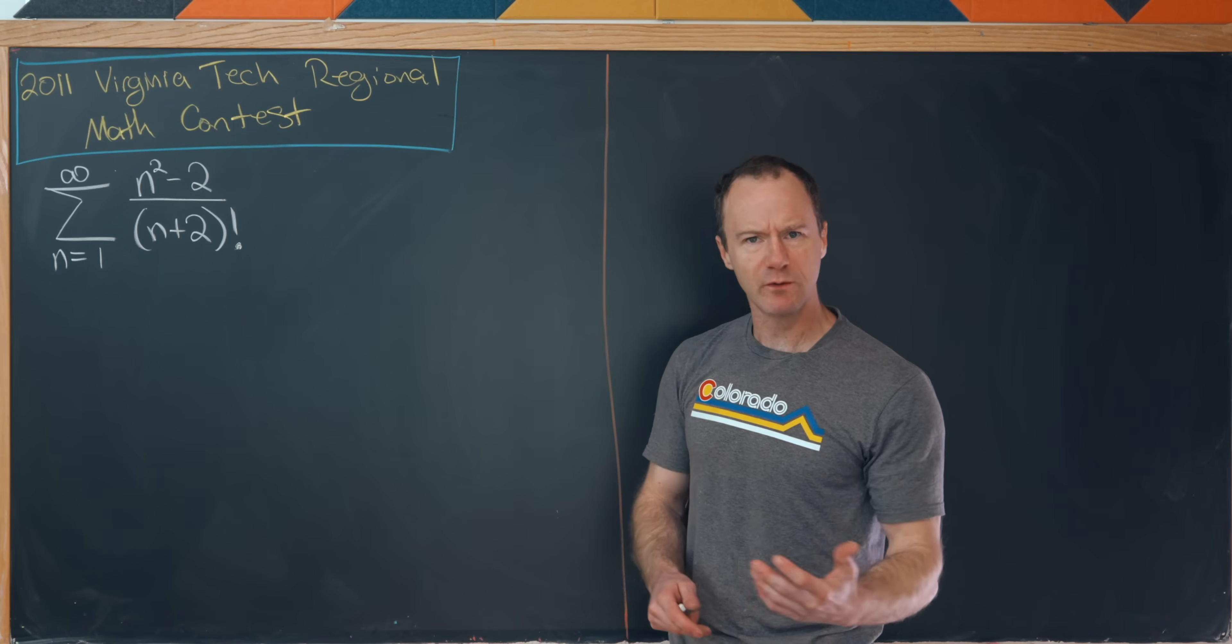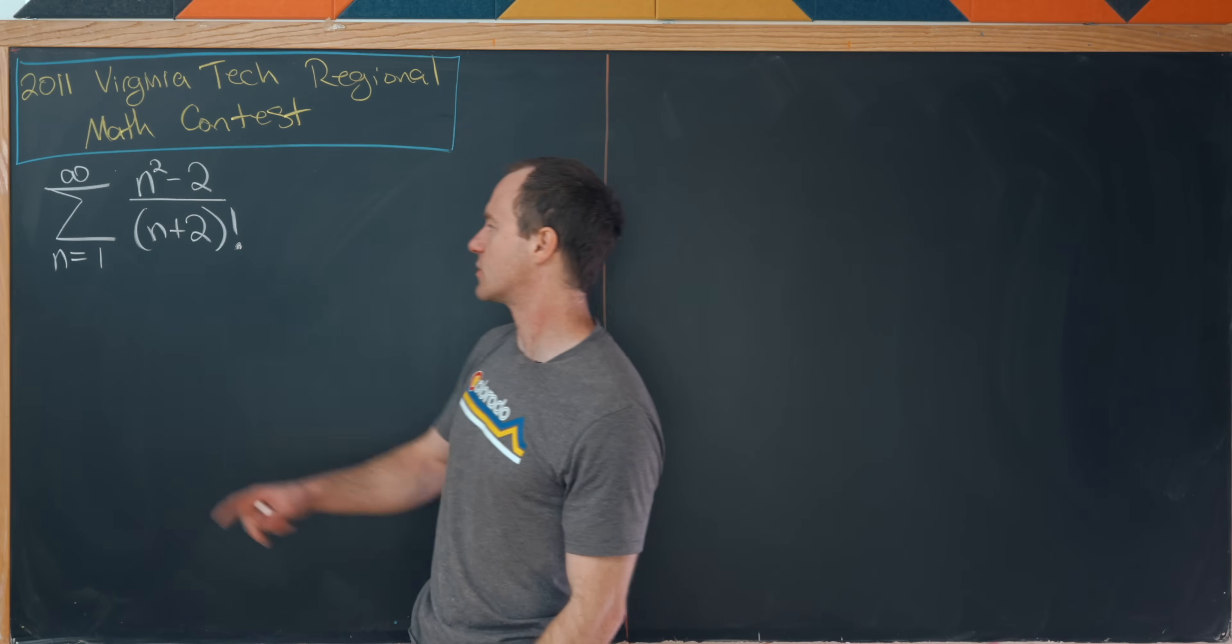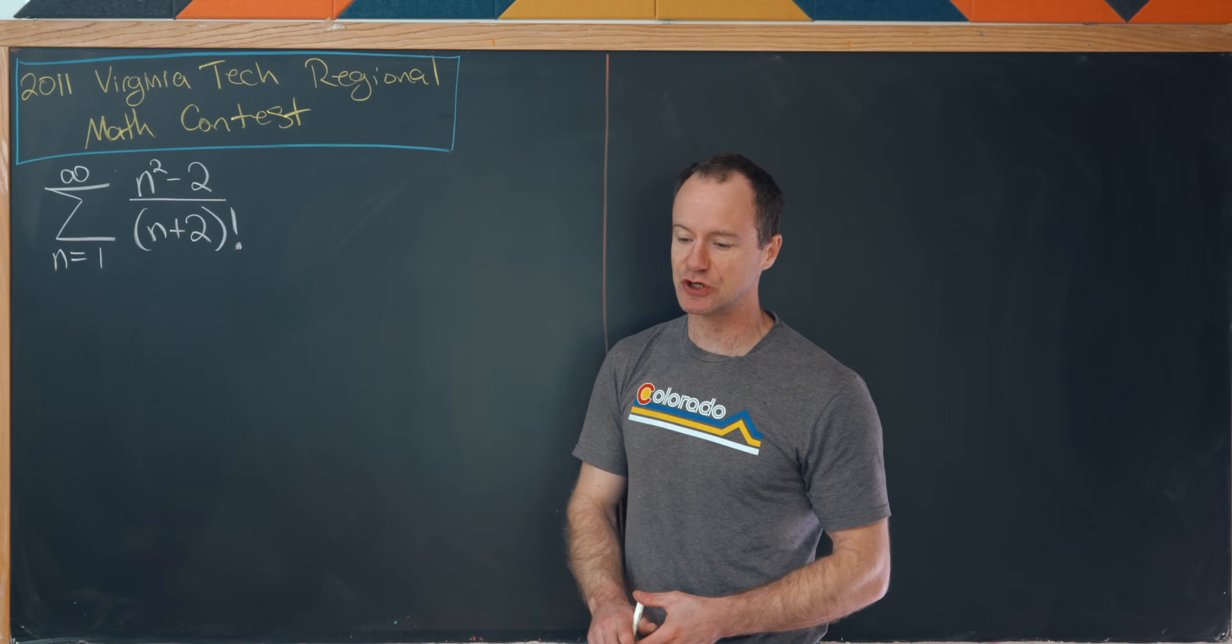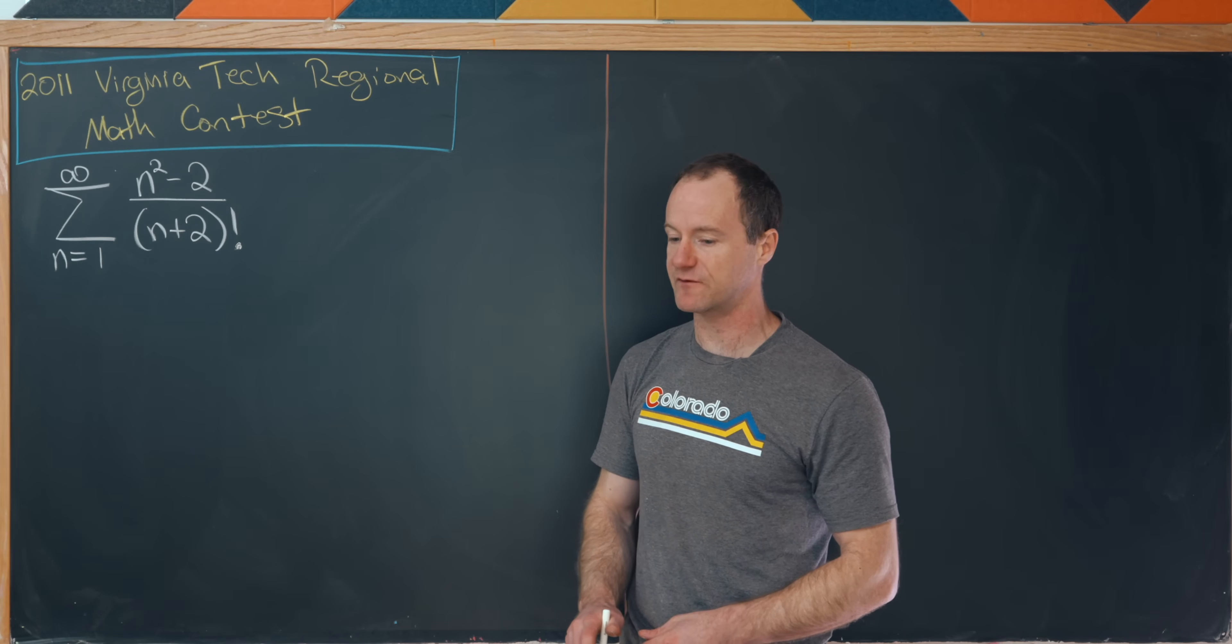Okay, so what do we want to do here? We'd like to determine the sum as n goes from one to infinity of n squared over two over n plus two factorial.